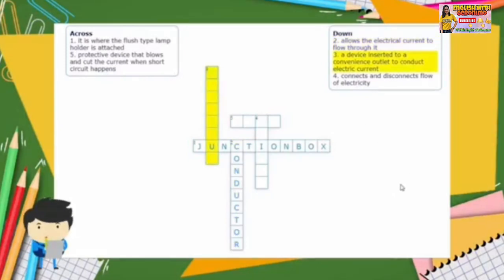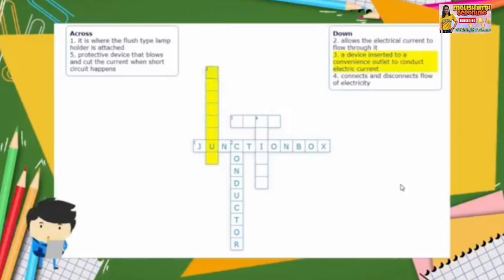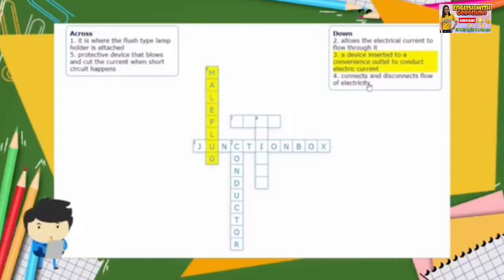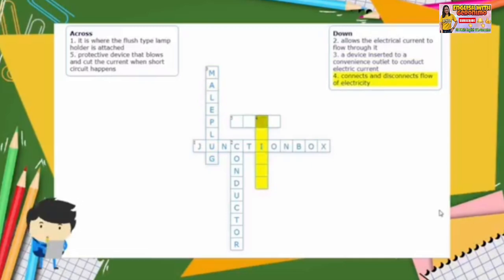Number three: a device inserted into a convenience outlet to conduct electric current. The answer is nail plug. Number four: connects and disconnects the flow of electricity. The answer is switch.